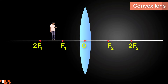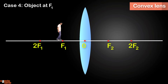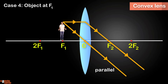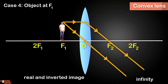Next, I'll move ahead and stand at the focus of the convex lens. Applying 2 out of the 3 rules, this is an interesting case because the refracted rays are parallel — they never meet. So where is the image formed? The image is far away, formed at infinity. The image is real and inverted and it's highly magnified.